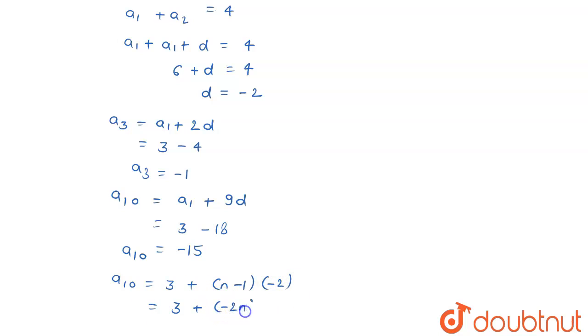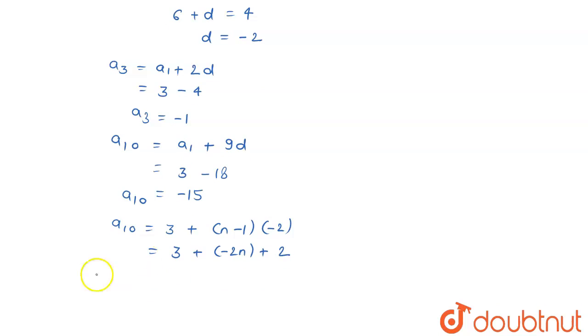Minus 2n plus 2, or I can say that the value will be of nth term—this is my nth term, not 10th term, let me correct it here—nth term will be 5 minus 2n.